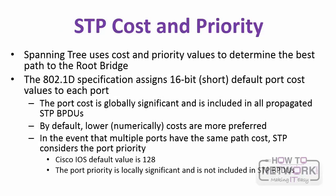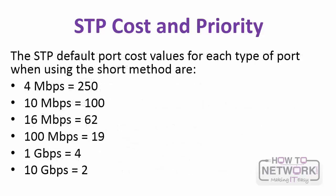Spanning tree uses cost and priority values to determine the best path to the root bridge. In the 802.1d specification it assigns 16-bit default port cost values to each port. The port cost is globally significant and included in all propagated BPDUs. Lower costs are more preferred. If multiple ports have the same path cost, spanning tree considers the port priority — the default value is 128. However, port priority is locally significant and not included in spanning tree BPDUs.